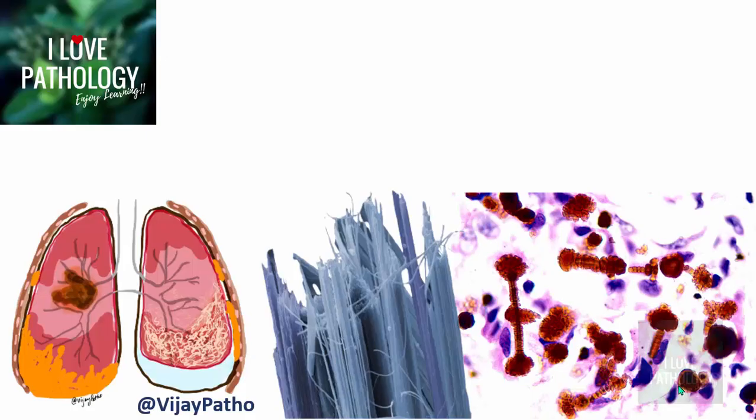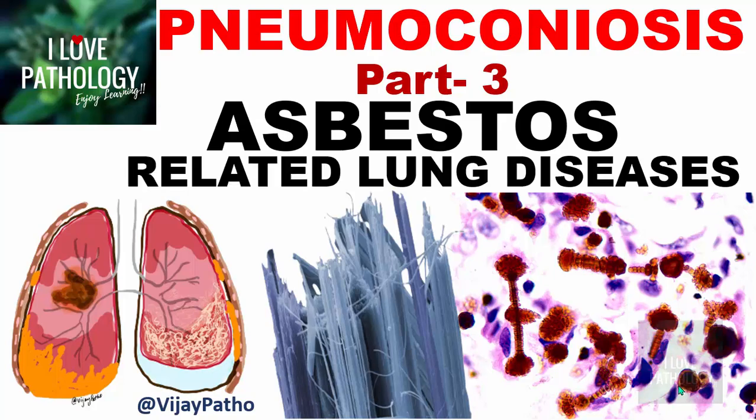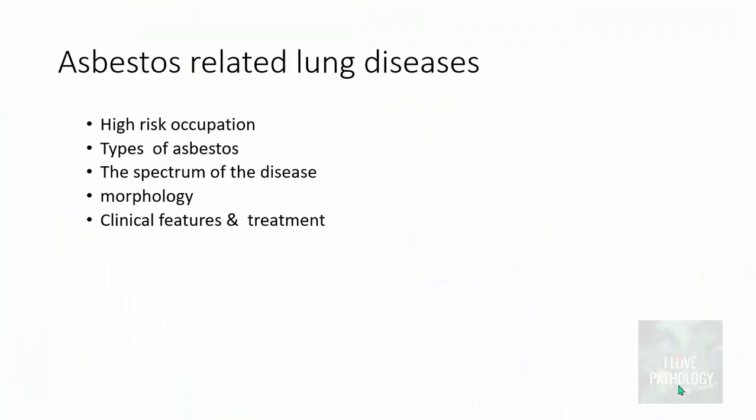Hello everyone. Welcome to this short tutorial from Pathology Made Simple at ilawepathology.com. This is part 3 of the pneumoconiosis series. In part 1 we discussed the general aspects of pneumoconiosis and coal workers pneumoconiosis. In part 2 we discussed silicosis, and in this part we will discuss asbestos-related lung diseases. We will study this under various headings.